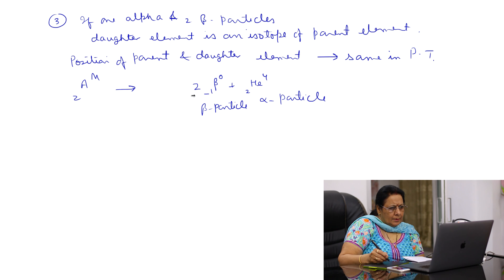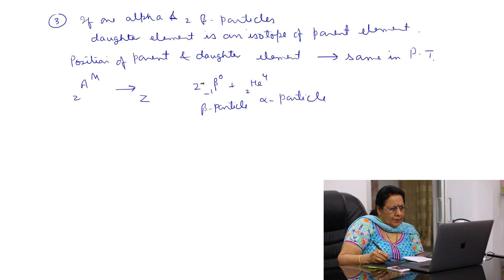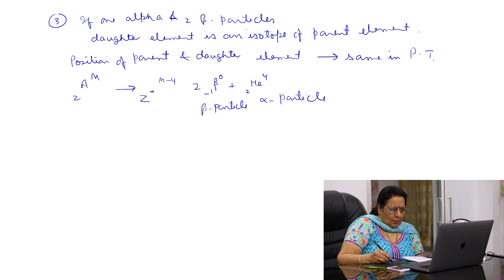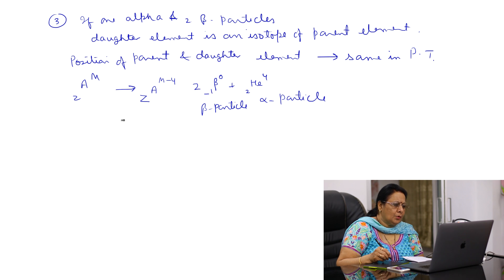With 1 alpha and 2 beta particles emitted: atomic number is decreased by 2 by alpha and increased by 2 by beta, so atomic number remains the same. There is no change in atomic weight by the emission of beta particles, but atomic weight is decreased by 4 by the emission of the alpha particle. So the element remains in the same group because the atomic number is the same — both are isotopes.